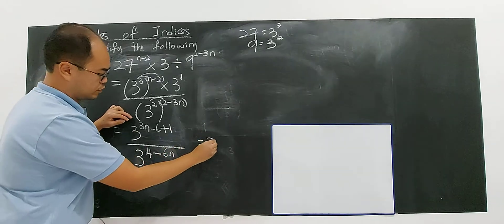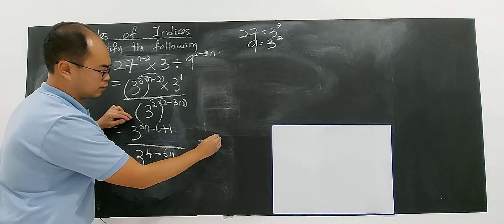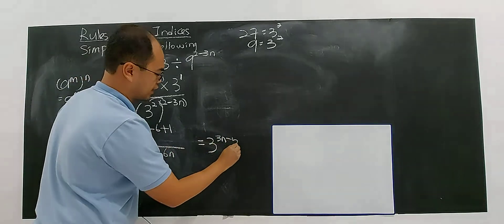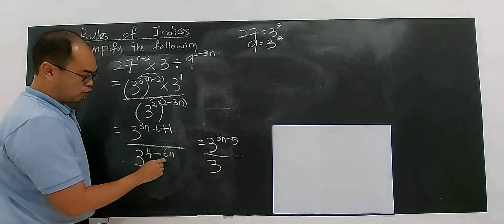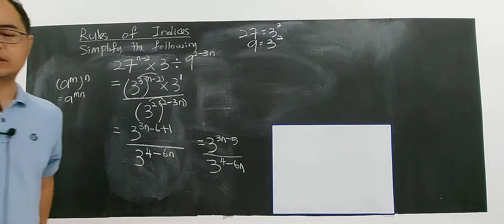So 3 to the power of 3n minus 6 plus 1 - you have 3n and negative 6 plus 1 gives you negative 5, divided by 3 to the power of 4 minus 6n. We're getting nearer to the final form after you simplify.